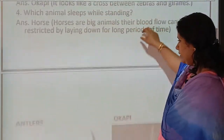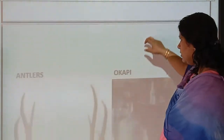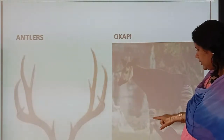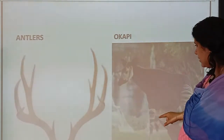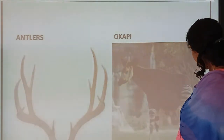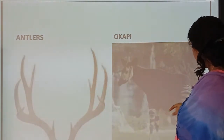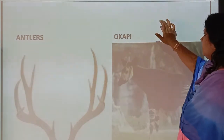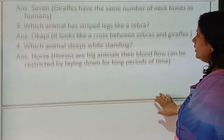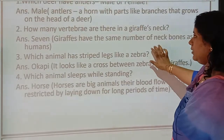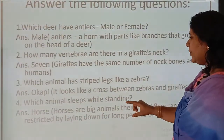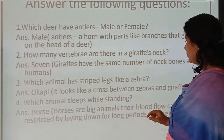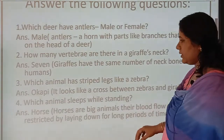Here is the picture of Okapi. It has the same stripes, especially on its legs and back. That's why it looks like a cross between zebras and giraffes.